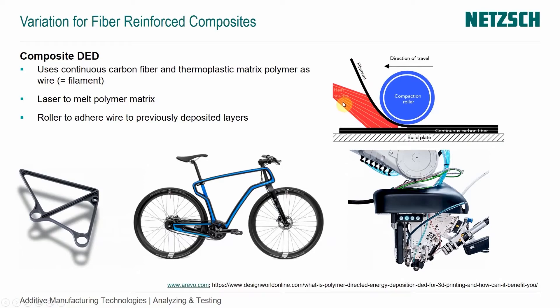We have a laser heat source to melt the polymer matrix from the incoming filament or wire and also from the already deposited material. There is a compaction roller that actually helps adhere the wire to the previously deposited layers.